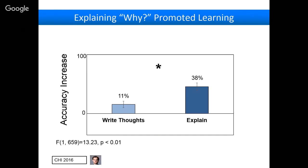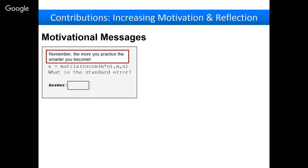If you look at accuracy from pre-test to post-test — giving people similar problems, then problems where they either explain or write their thoughts, then a post-test with new problems — explaining why results in significantly better learning. The key reason is that explaining why forces people to find underlying principles. When you ask why an answer is correct, you're not just memorizing it or adding random thoughts — you're being forced to say how this answer is an instance of a general principle.